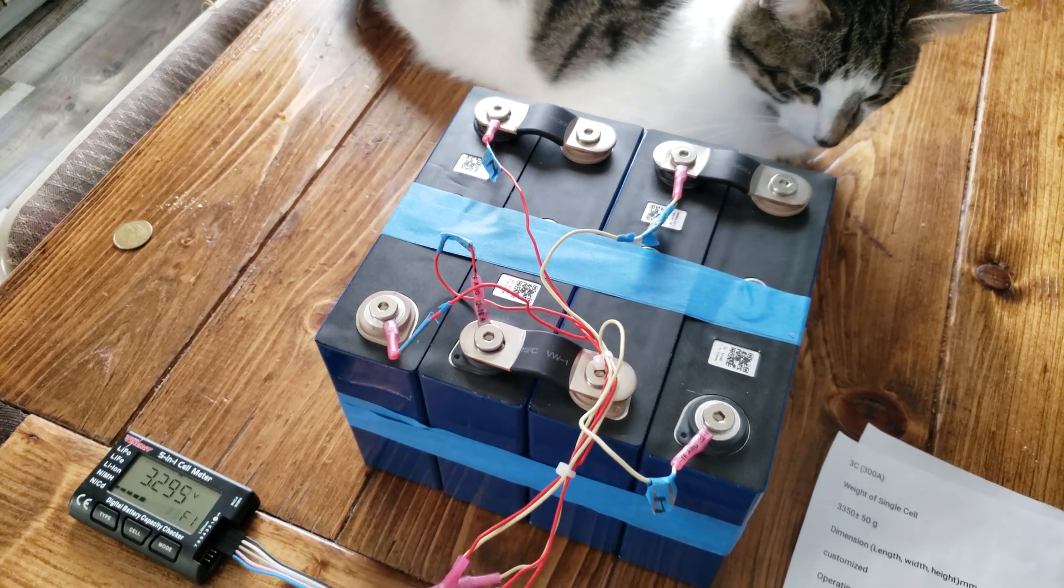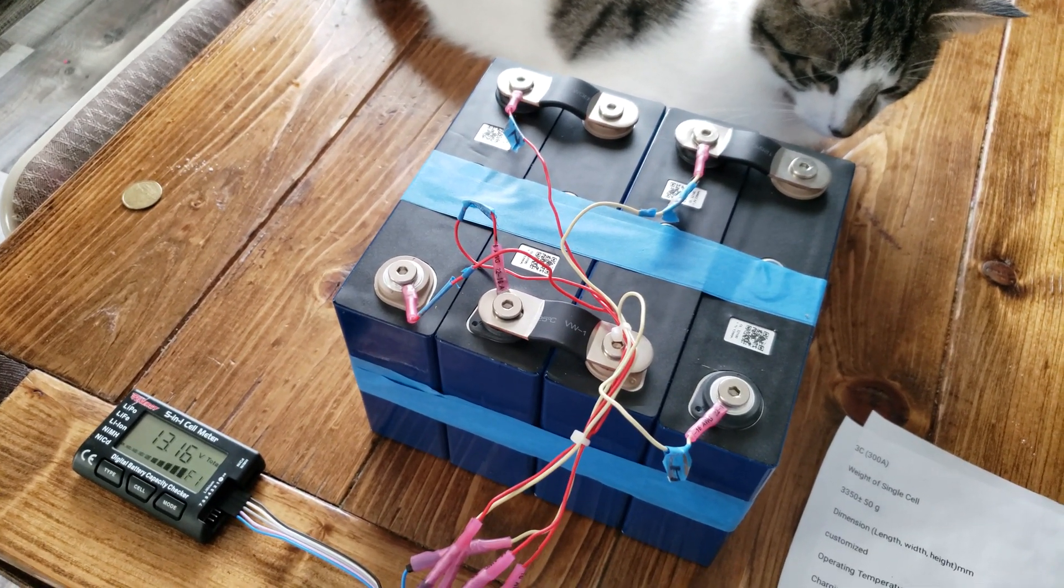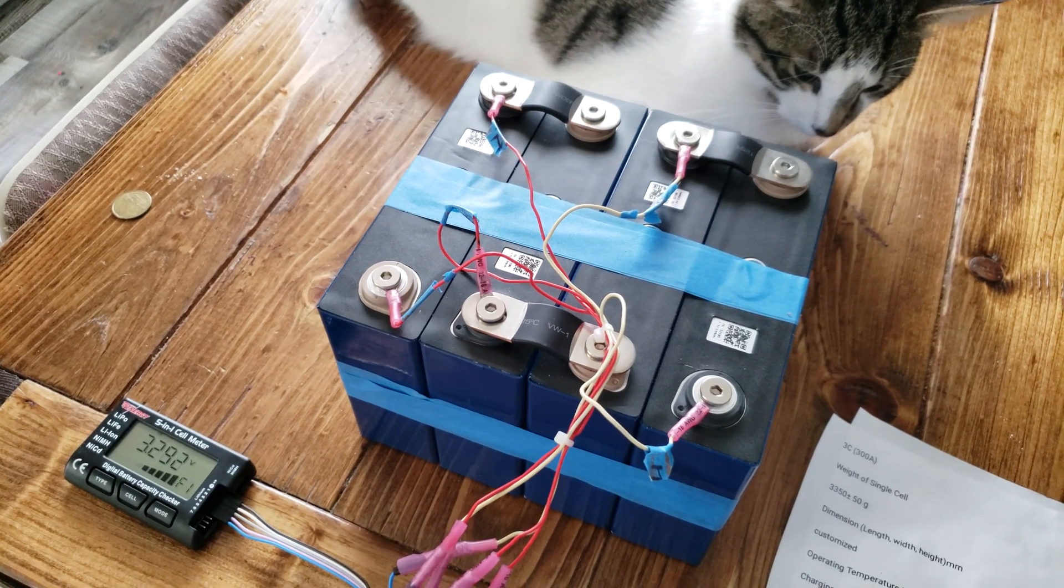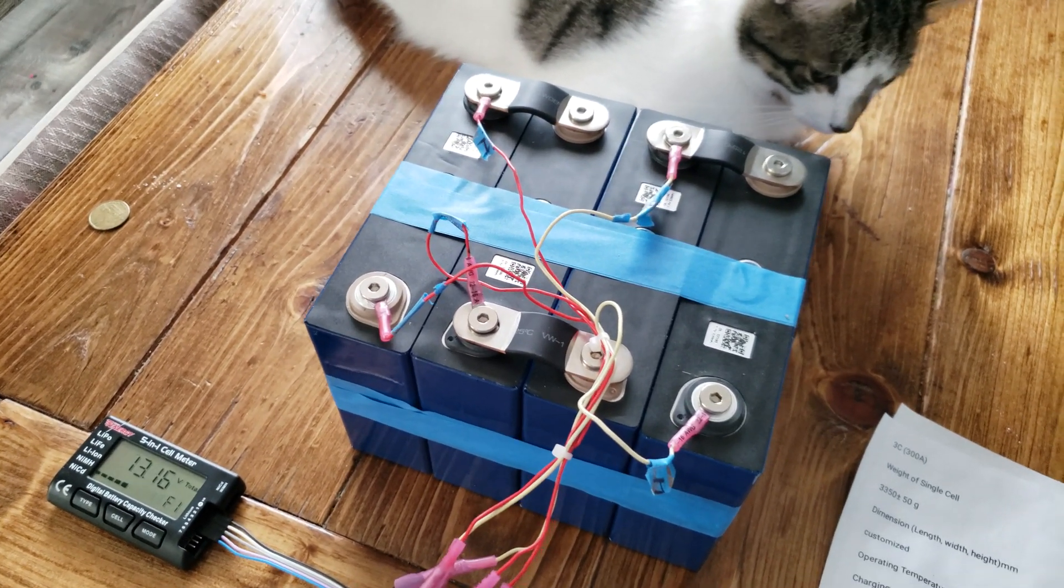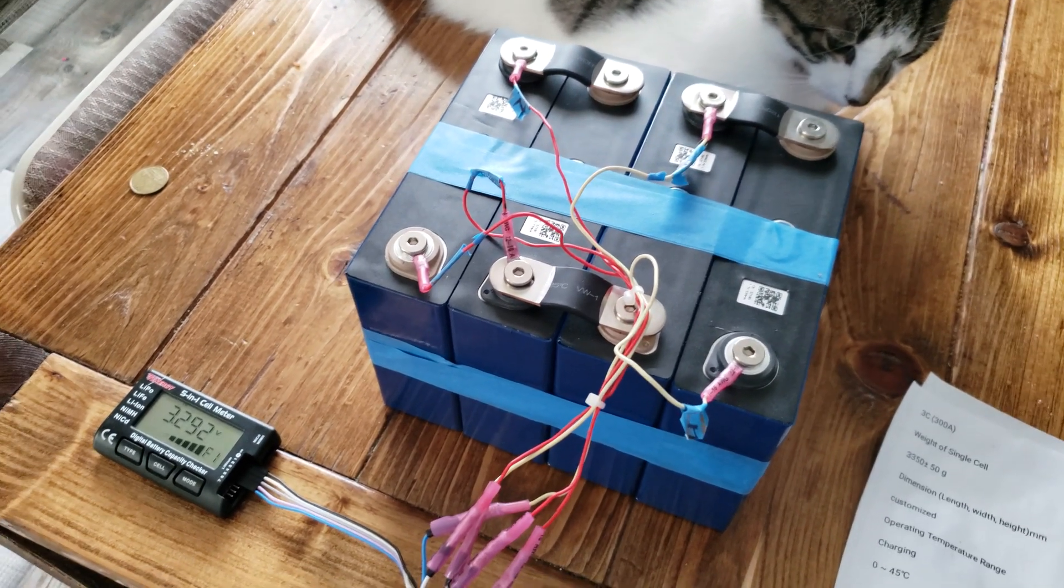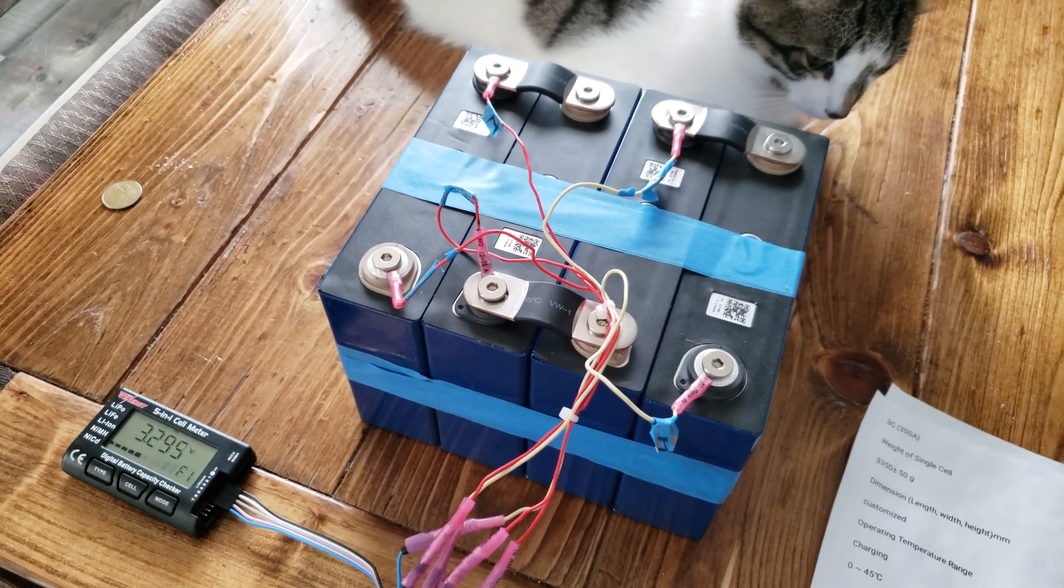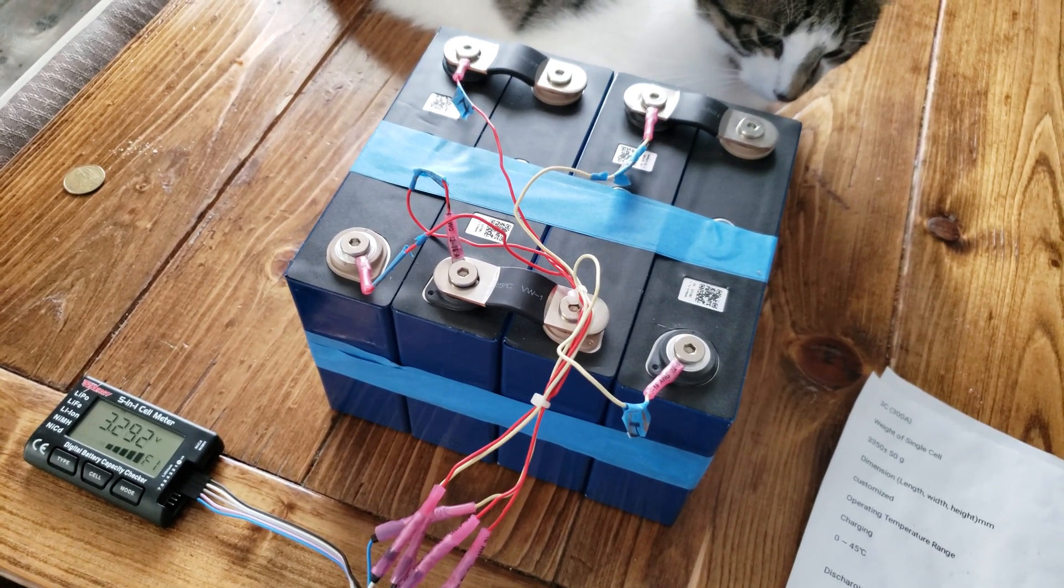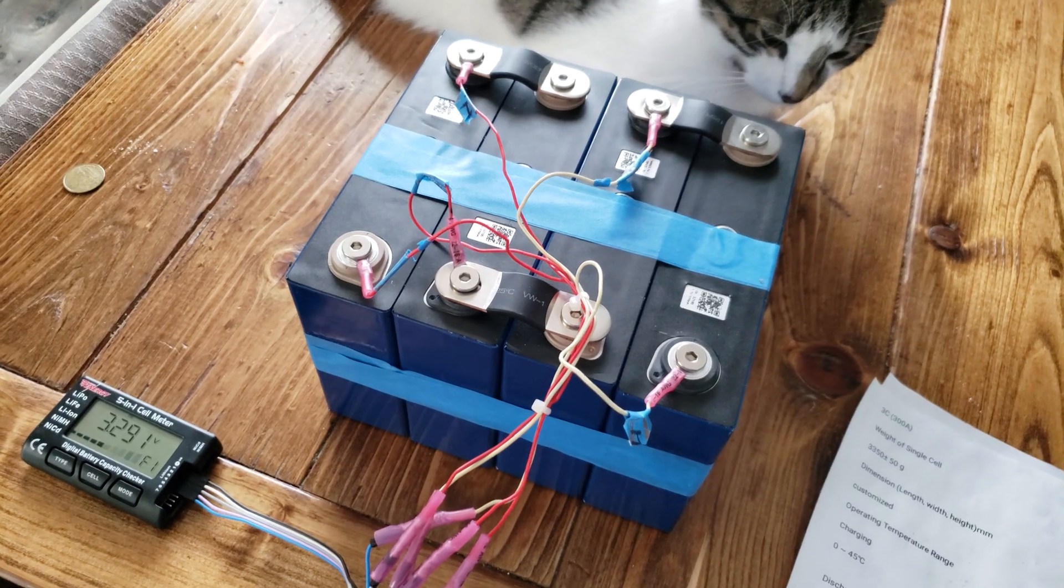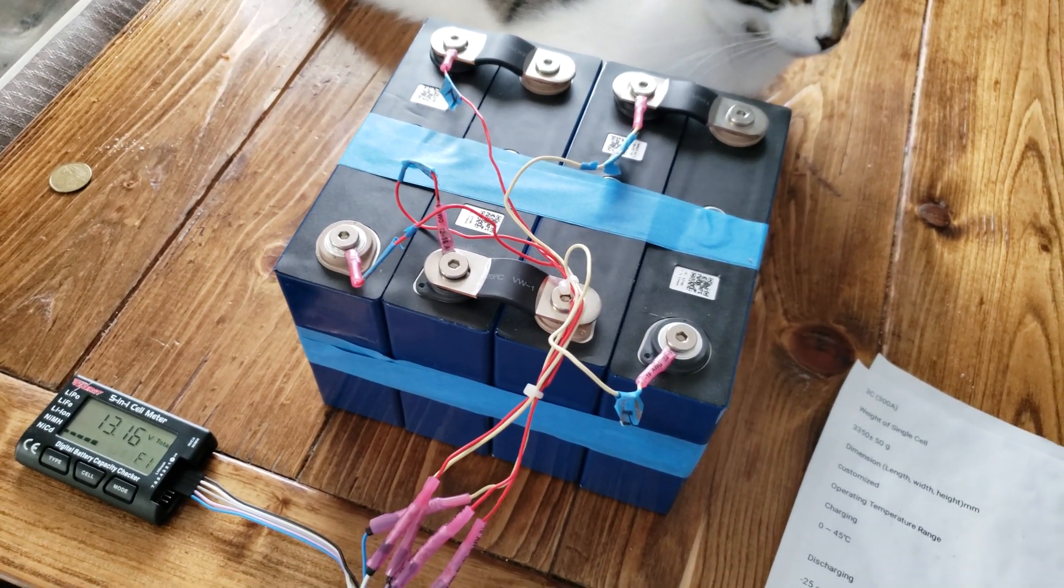The charging temperature ranges from 0 to 45 Celsius, I don't know what that is in Fahrenheit. Discharging, you could discharge it from negative 25 to 55 Celsius. Storage temperature for one month, 0 to 60 degrees Celsius, and for six months you want to store it at 0 to 25 Celsius.